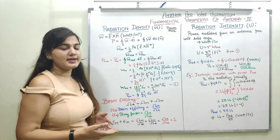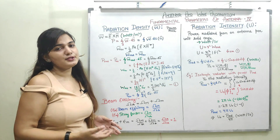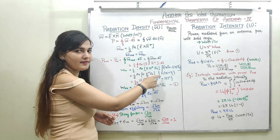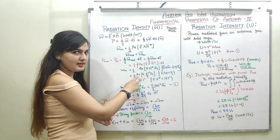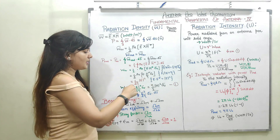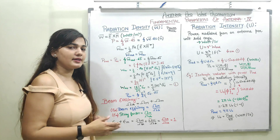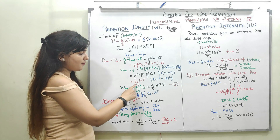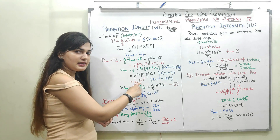E and H are related through the intrinsic impedance: E upon H equals the intrinsic impedance of free space, which is 120π or 377 ohms. Replacing H with E upon eta, the average power density becomes one-half of the real part of E times (E upon eta) conjugate times AR. Since E times E conjugate equals |E|², the average power density simplifies to (1 / 2η) · |E|² · AR.